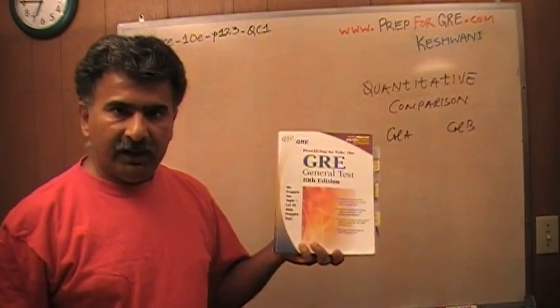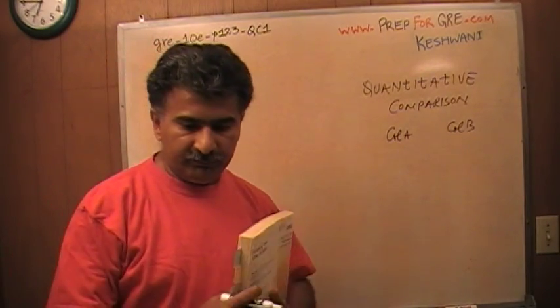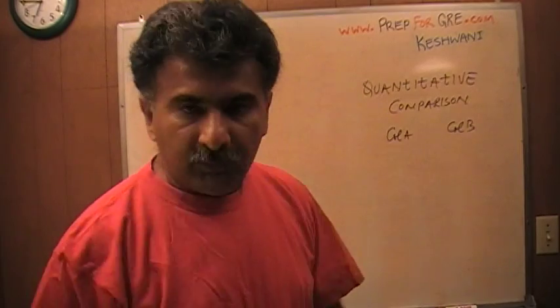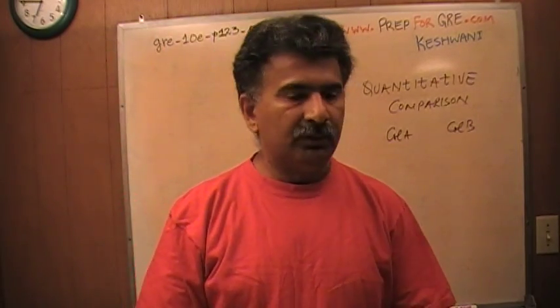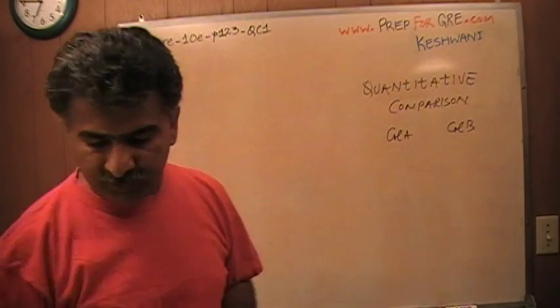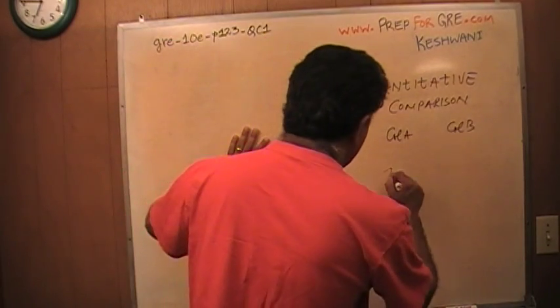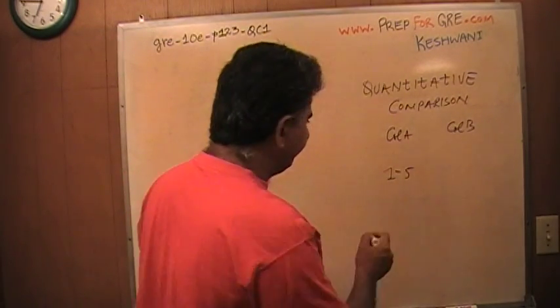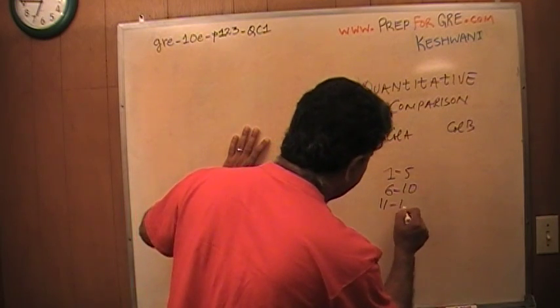The seven exams in this book are from the good old days when the exam used to be paper and pencil. In that scenario, all the questions were arranged in order of difficulty. There are 15 questions in this particular section of quantitative comparison. Which means, 1 through 5 are easy, 6 through 10 are medium, and 11 through 15 are hard.